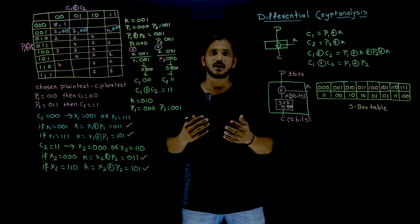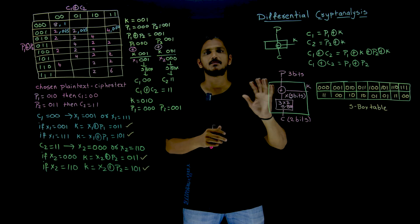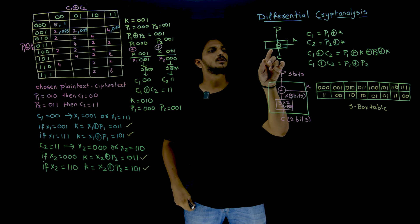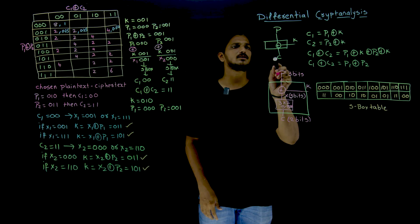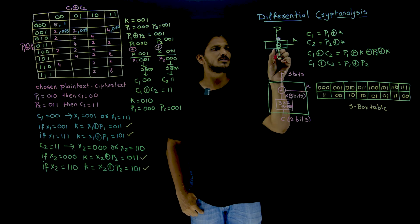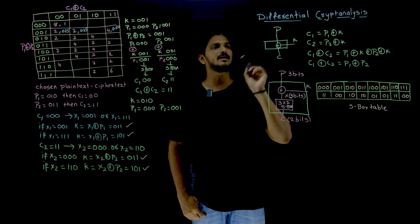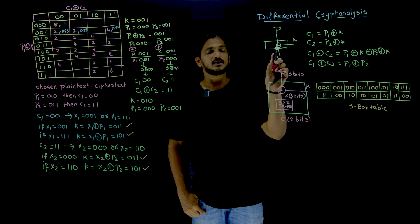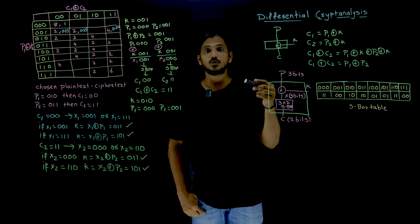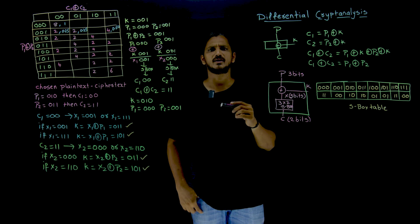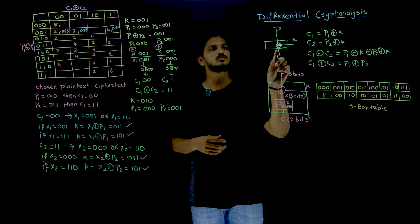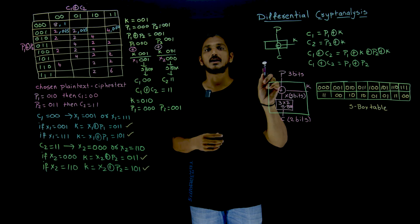How is it going to be done? Let's try to understand with a simple example. We will take a simple cryptography technique. In this technique, we are having a plain text P, and this plain text is sent into the cryptography technique. We are having a K — K means key value. The operation which we are going to do here is an exclusive-OR operation. Very, very simple cryptography technique. So P exclusive-OR K gives you the cipher text.